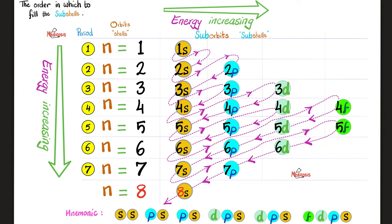Do you have a mnemonic? Yes. An Egyptian teacher came up with this acronym. It goes: SS — PES — PES — DPS — DPS — FDPS. That's the order: 1S, 2S, 2P, 3S, 3P, 4S, 3D, 4P, 5S, 4D, 5P, 6S, 4F, 5D, 6P, 7S, 5F, 6D, 7P, etc.